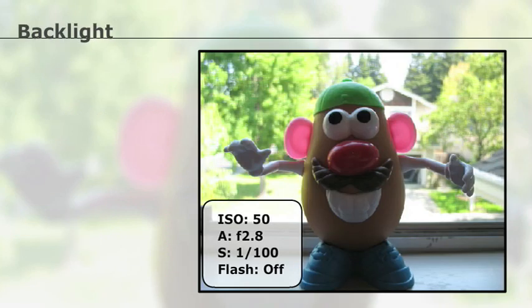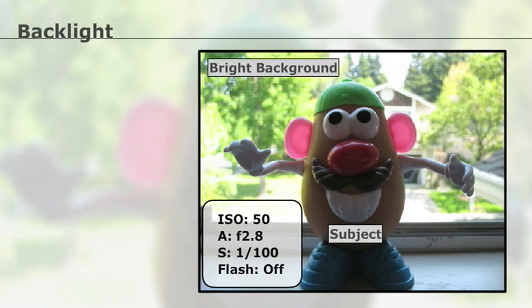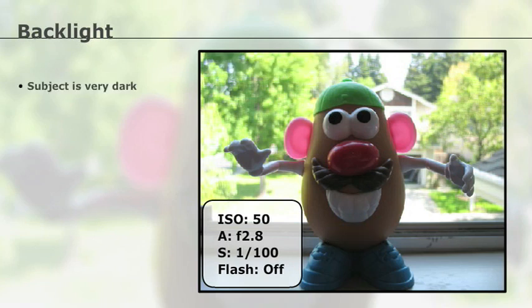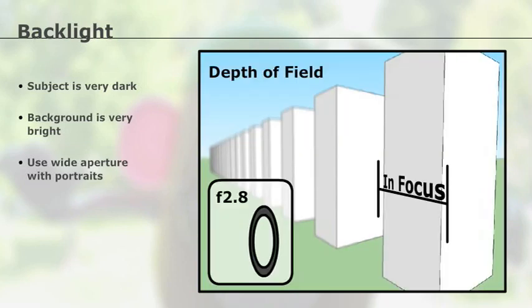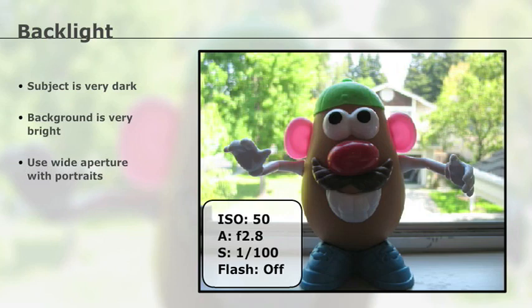Here is a typical backlight situation. The subject is in front of a window with a bright background. As you can see, my subject is much too dark and the background is very bright. Because this is a portrait, I made sure to use the camera's aperture priority mode and set a nice wide aperture of f2.8 so at least the background would be blurred out. But that doesn't fix the backlight problem.